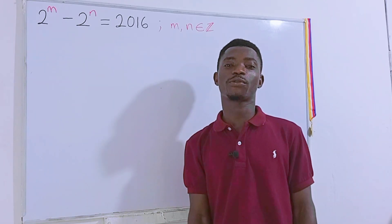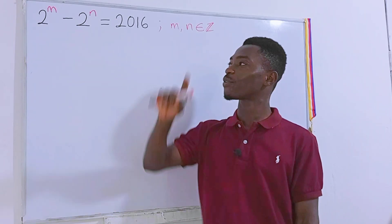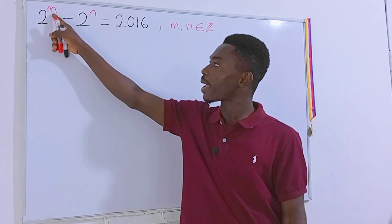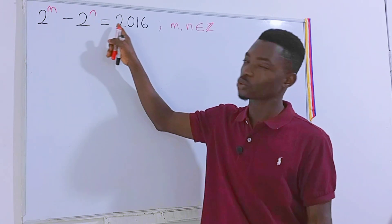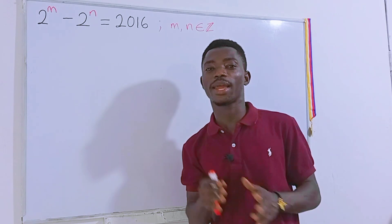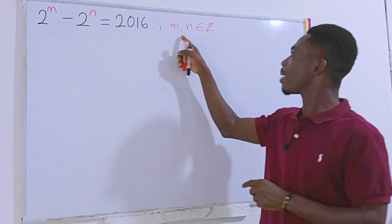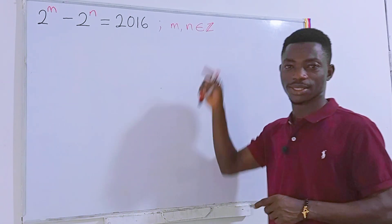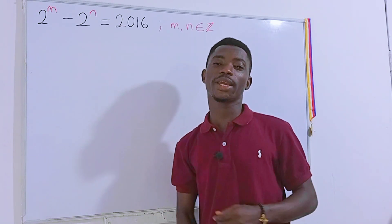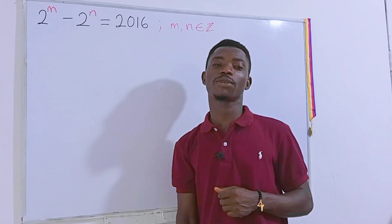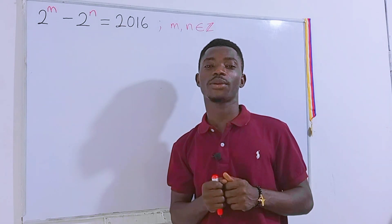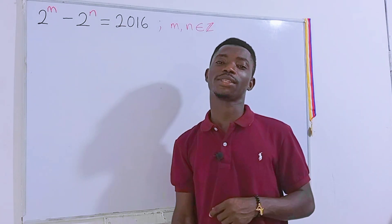Hello guys, and welcome to another wonderful video. We have this interesting question: 2 to the power m minus 2 to the power n is equal to 2016, and we have to find the values of m and n, where m and n are integers. Before we begin, feel free to pause the video and give it a try first.